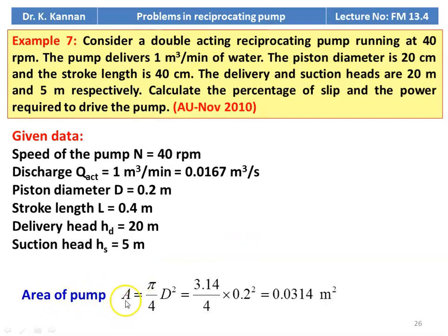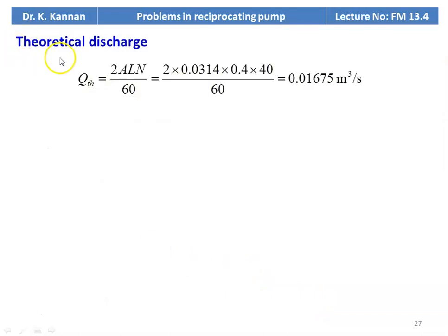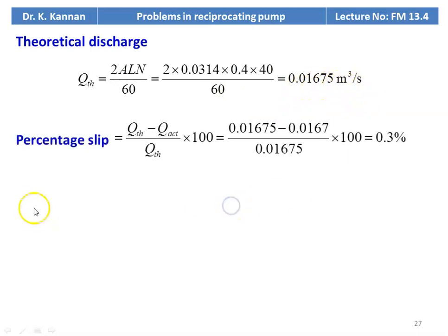Area of the pump: A = π/4 × D² = 3.14/4 × 0.2² = 0.0314 meter square. Theoretical discharge Q_theoretical = 2ALN/60 (the 2 stands for double acting) = 2 × 0.0314 × 0.4 × 40/60 = 0.01675 meter cube per second. Percentage of slip = (Q_theoretical − Q_actual) / Q_theoretical × 100 = (0.01675 − 0.0167) / 0.01675 × 100 = 0.3%.